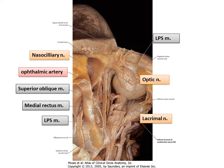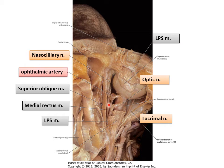Here's another little review slide for us. We can see the levator palpebrae superioris with cut ends visible. Here's your optic nerve. There's a lacrimal nerve on its way to the lacrimal gland. This muscle is the inferior rectus — we had to remove a lot to actually get all the way down to view this. Then you have your superior oblique, and just next to it is the medial rectus, and here is your ophthalmic artery. This tiny little nerve going medially and anteriorly is the nasociliary nerve.